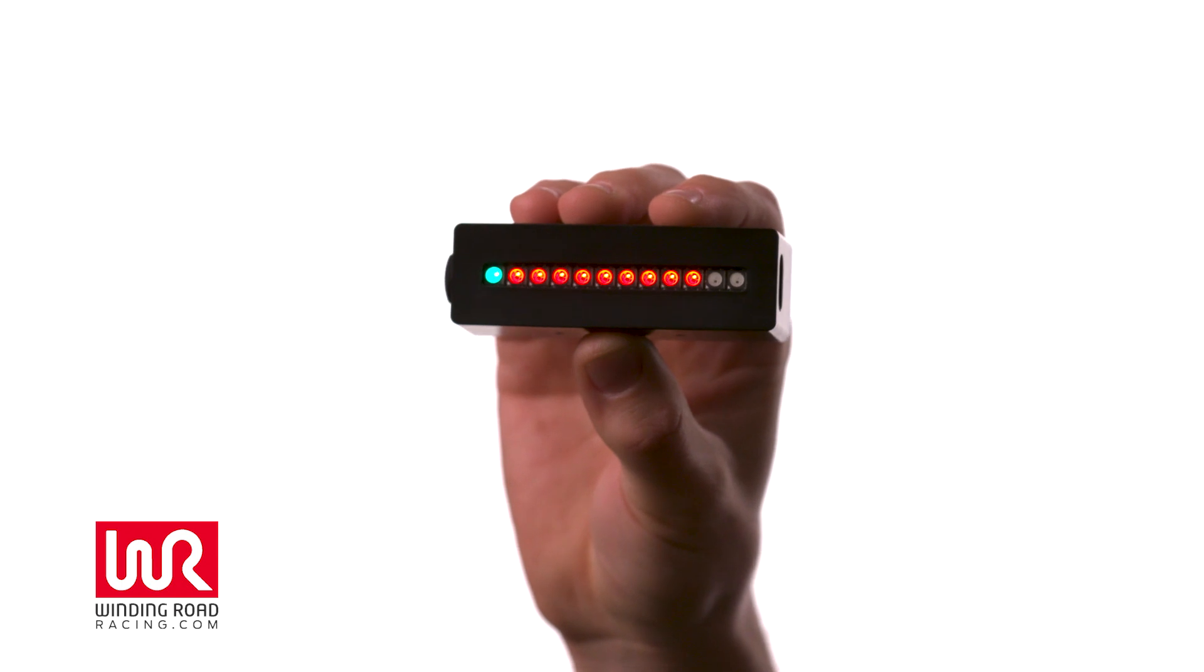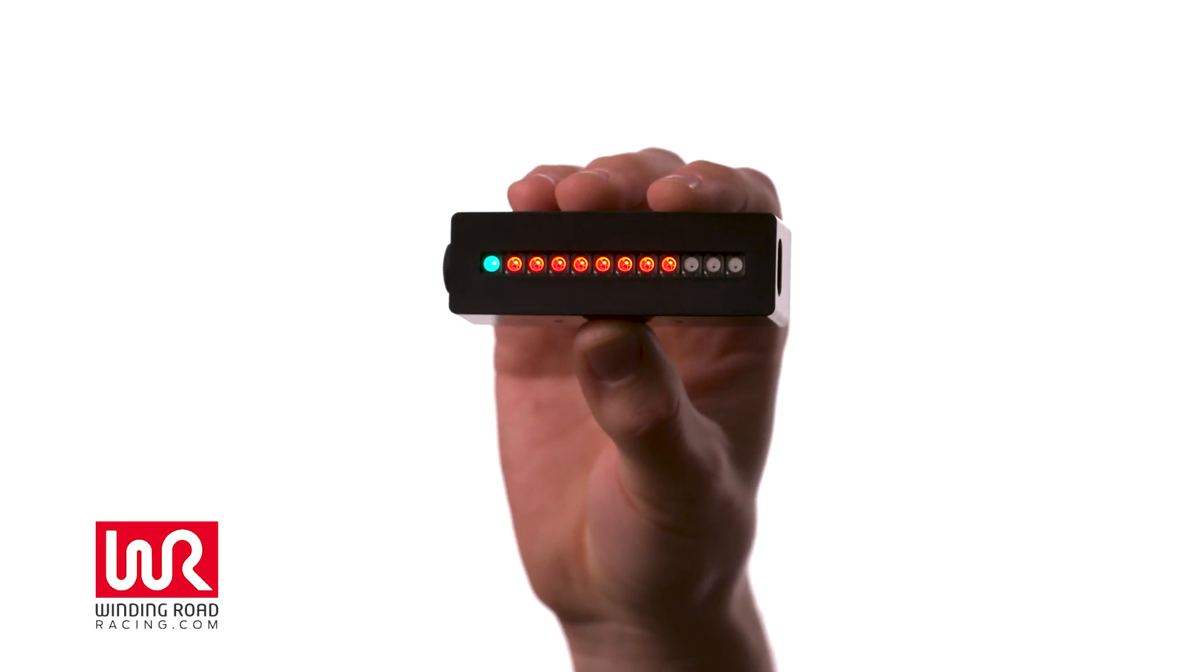If there's red lights displayed on the Apex unit, that means the tire has more potential to grip. That means you could brake later and harder. You could roll more speed through the corner or you could get on the power exiting a corner a little bit sooner.